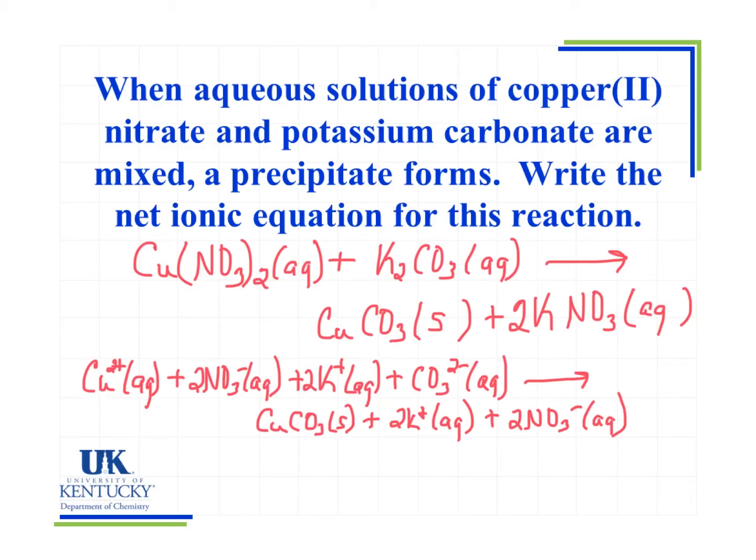Now what I want to do is look for things that are exactly the same on both sides, those spectator ions, and cancel them out. I see that copper goes from Cu²⁺ aqueous to copper in the copper carbonate compound, so that's not a spectator ion. Next I look at nitrate, and I see aqueous nitrate ions on both sides, so I can mark them out. Likewise with potassium, I can mark those out. With my carbonate, it goes from aqueous ions into a solid compound. So what I'm going to end up with for my net ionic equation is Cu²⁺(aq) + CO₃²⁻(aq) → CuCO₃(s).